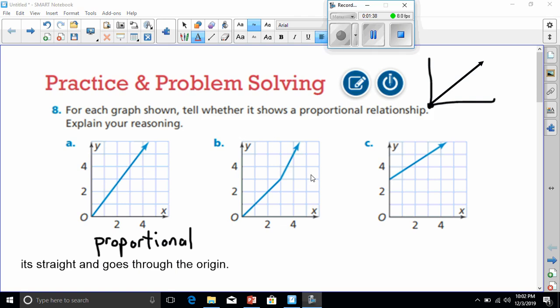For B, we see that it does go through the origin, but the line is not straight, so it is not proportional. I'm just going to type this one out, make it a little easier on me. Not proportional, goes through origin but not straight.